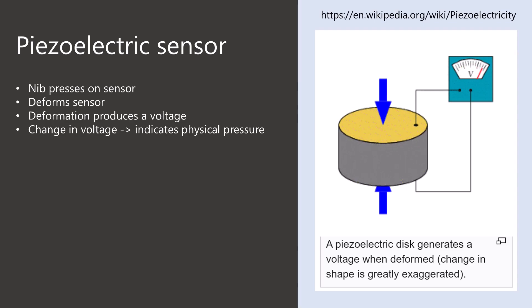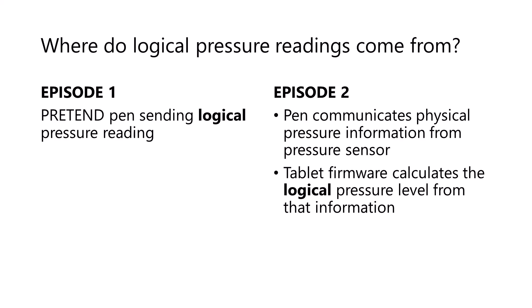And I think it is that voltage, or some numerical translation of it, which is the information that's being sent to the tablet. The tablet takes this information, and then the tablet determines what the logical pressure is. There is one subtle but very important point to stress here. The number of pressure levels is invented by the tablet firmware.